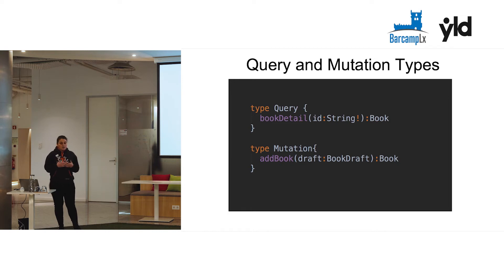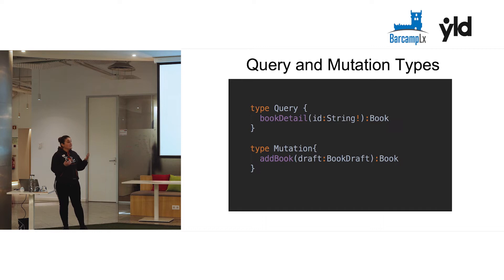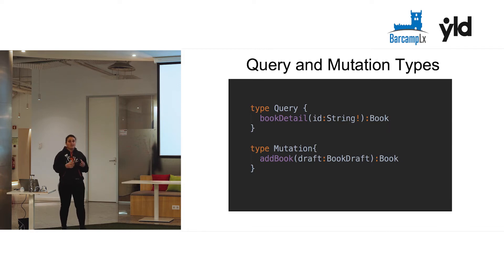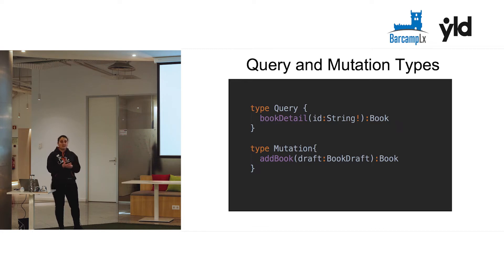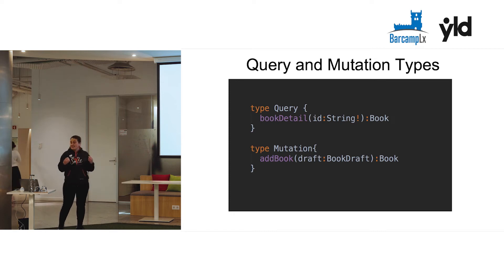We needed to think about how we should make resolvers for these kinds of queries and mutations. During our research, we found a tool from the Prisma team called GraphQL Code Gen, which allowed us to automatically generate TypeScript types from our GraphQL types. That was perfect for us, because by doing so we were able to automatically have types for our resolvers — defining the arguments and return values — with just a simple configuration and one command.